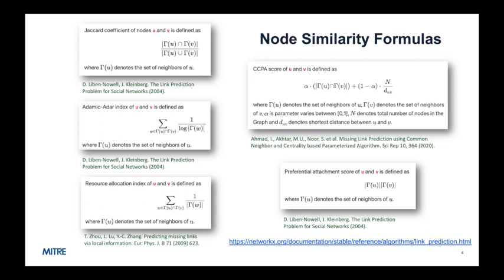We apply the formulas shown here for measuring similarity between nodes in our traffic graph. This includes Jaccard coefficient, Adamic-ADAR index, resource allocation index, common neighbor and centrality-based parameterized algorithm or CCPA, and preferential attachment score.